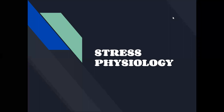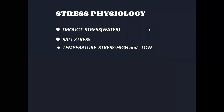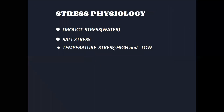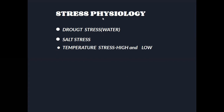Stress physiology in plants follows these types: first is drought stress or water stress, second is salt stress, and third is temperature stress. Temperature stress includes both high and low temperature stress.